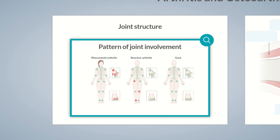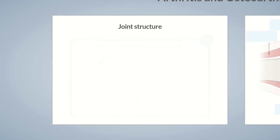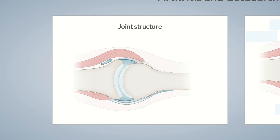In the first episode, we'll focus on joint pain, so let's start by looking at the structure of a joint. The function of a joint is to connect two bones to enable motion. A joint is surrounded by a joint capsule, which is lined internally by a synovial membrane.